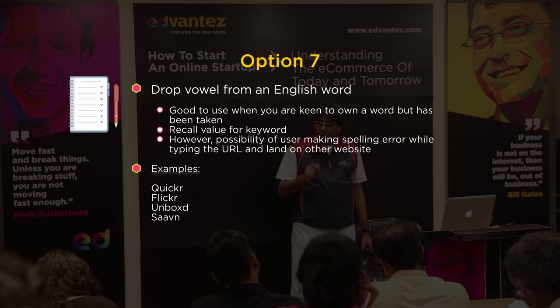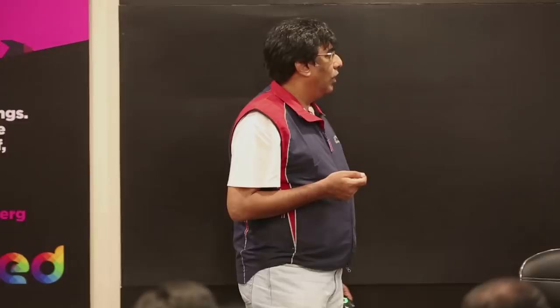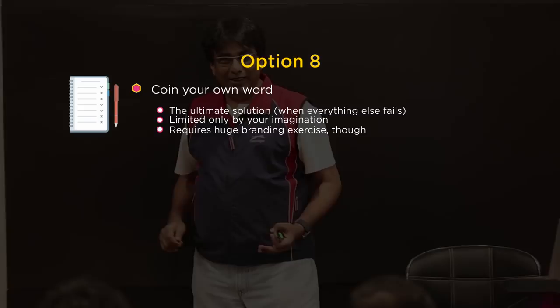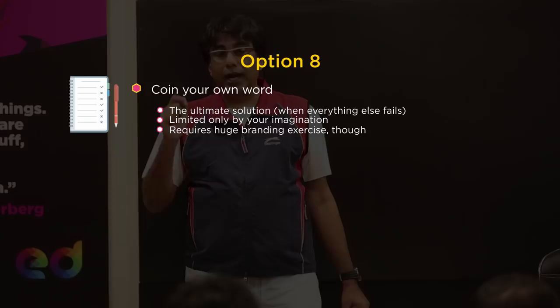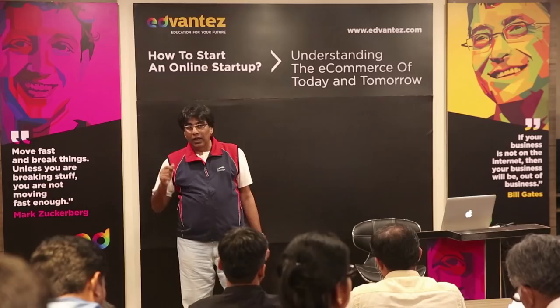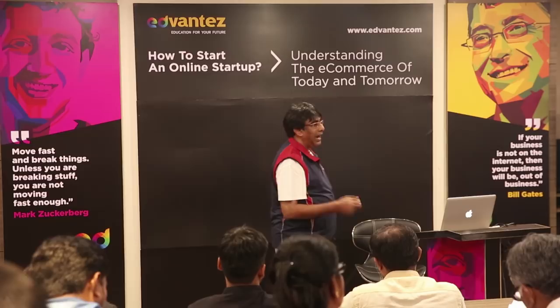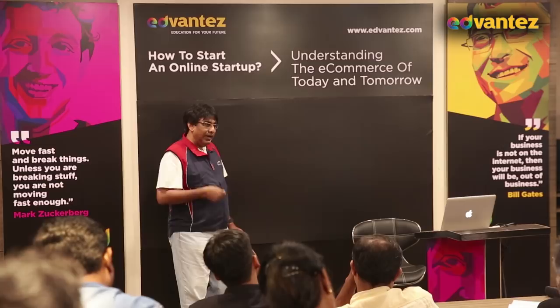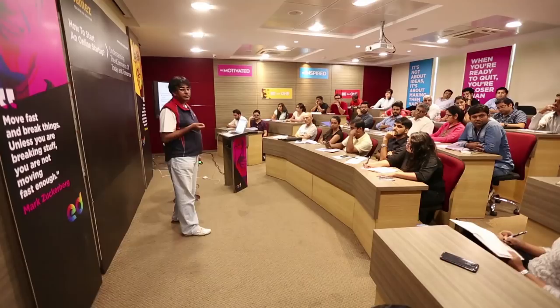Option eight is to coin a completely new word. Abbreviations like OLX are also a form of coining a new word, but they also stand for something meaningful like Online Exchange. Google actually has a meaning — it means one followed by 100 zeros. So even coined words can carry deep meaning.